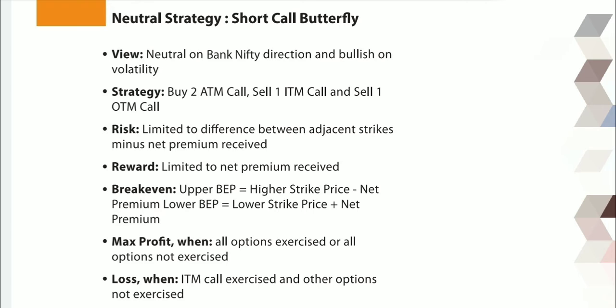Risk is limited to the difference between adjacent strike prices minus premium received. Reward is limited to net premium received. Break-even points: in this strategy you have 2 break-even points — upper BEP and lower BEP. This formula should be on your fingertip if you want to play options and apply strategies.